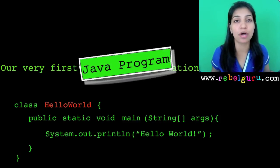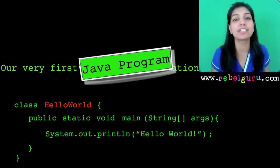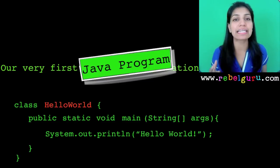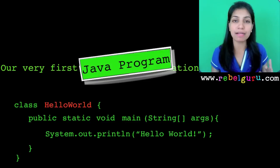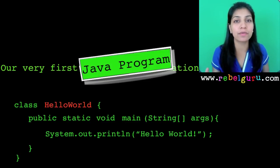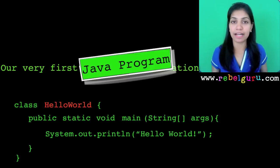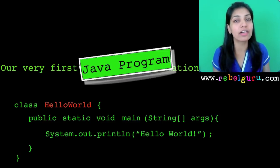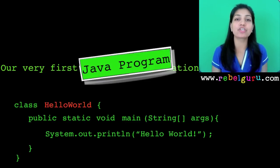The name of the class could be anything you want, but typically you should make it something relevant to the program. One convention for class names in Java is camel case — the first letter of every word in the class name is capitalized. Here, the class name has two words, 'Hello' and 'World', so H and W are capitalized. That's the camel case convention.